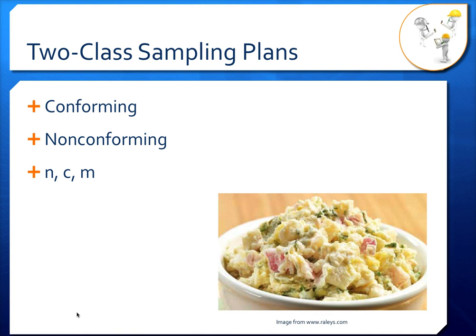Two-class sampling plans, in terms of our potato salad, are generally used for more serious pathogens. This is a tighter criteria because we really want to limit the amount of pathogens in our food so we don't make people sick when they eat it.